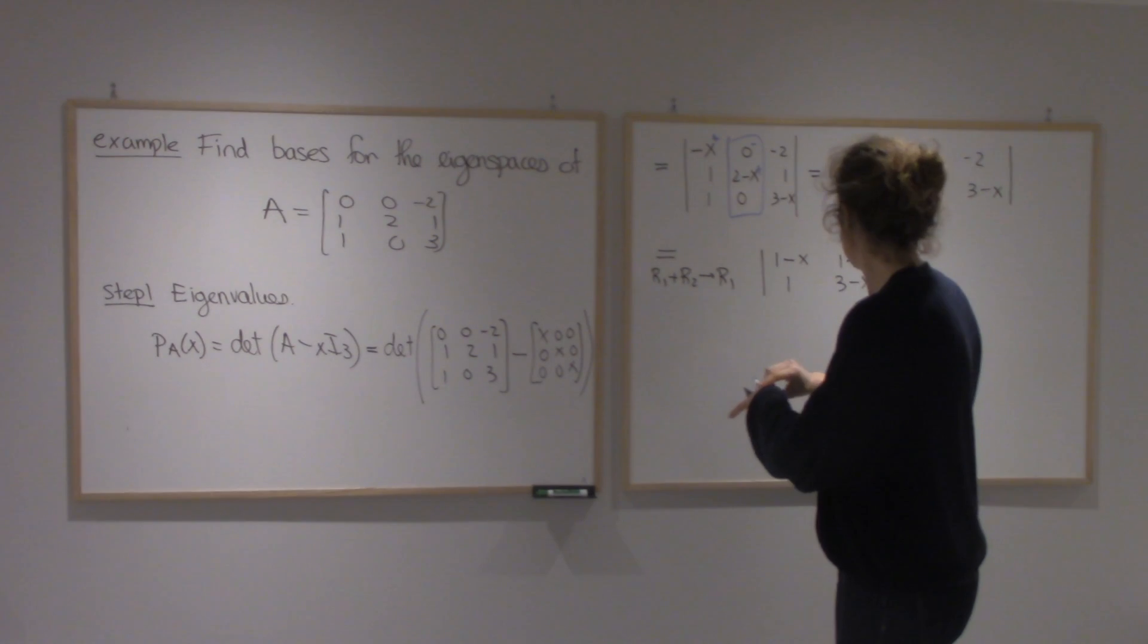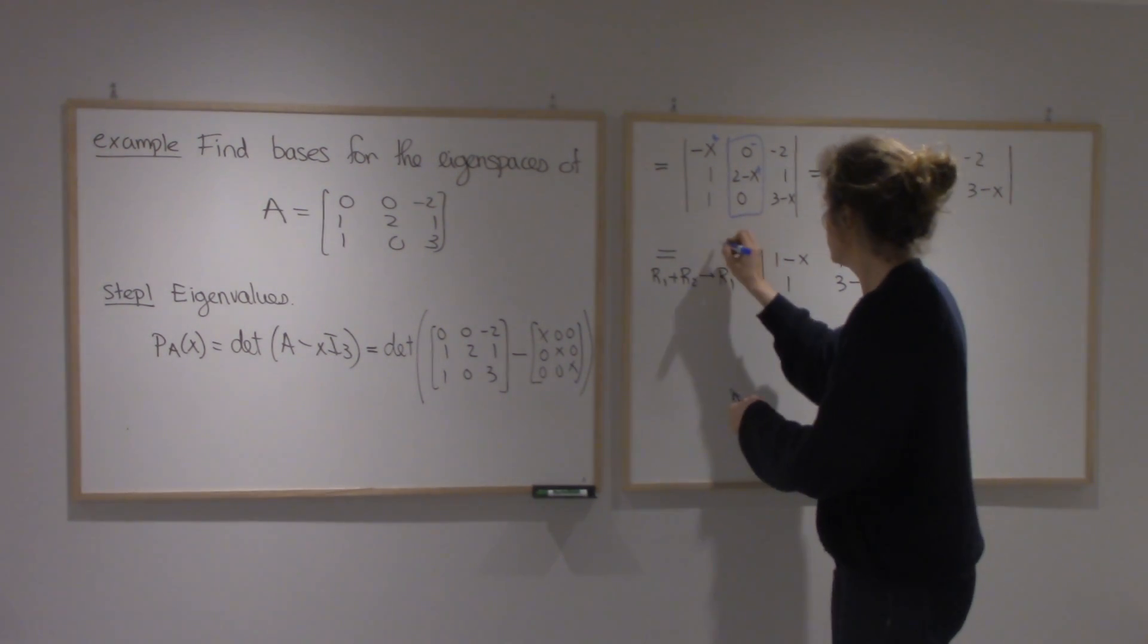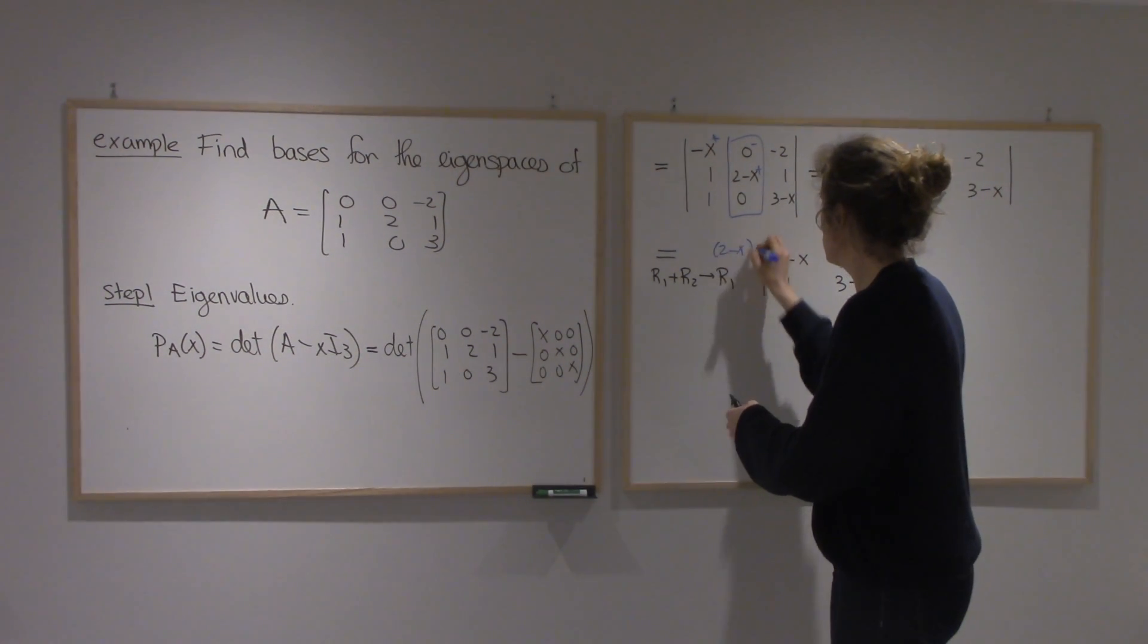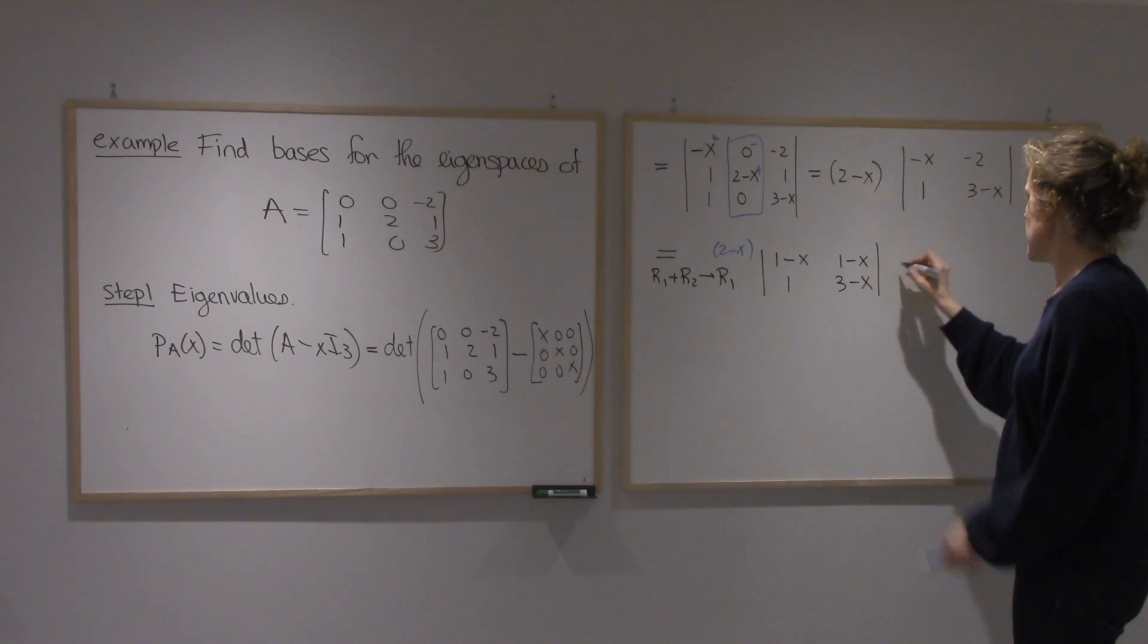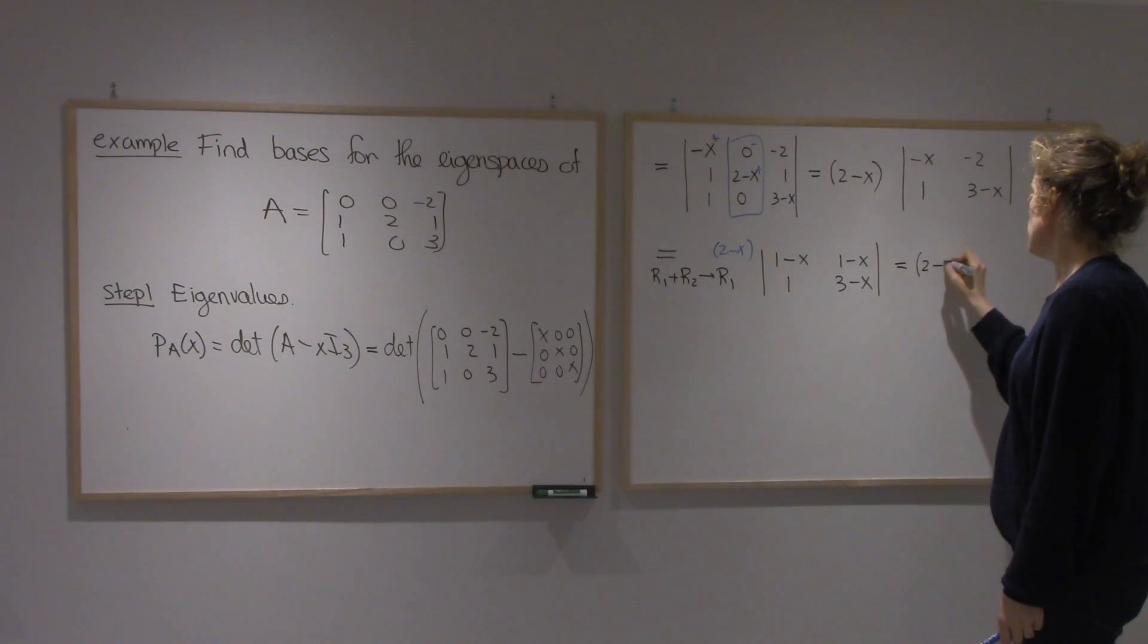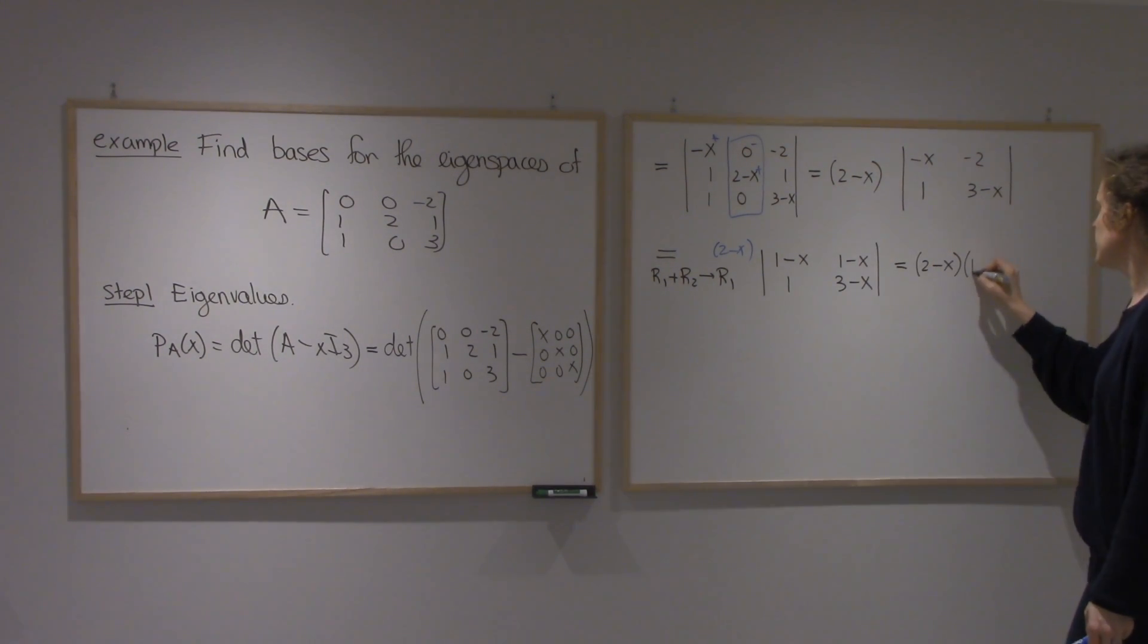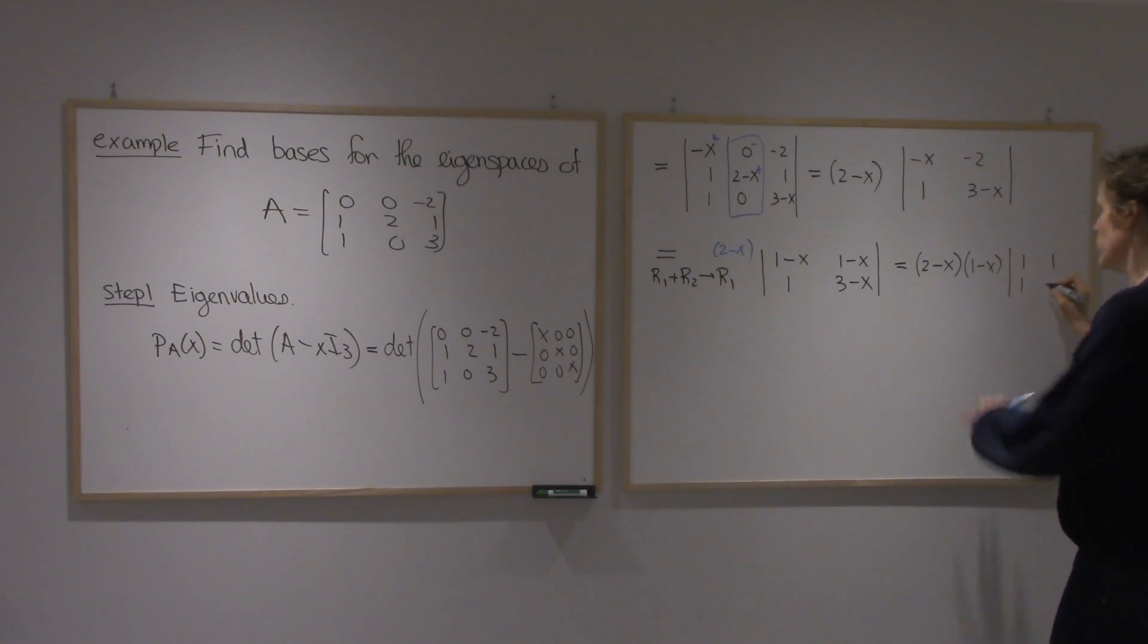I'm sorry I forgot my factor. Let me, I'm sorry it's a bit rough here. I'm going to factor 1 minus x. So I had 2 minus x from before, and now we'll factor 1 minus x. I'll have 1, 1, 1, 3 minus x.